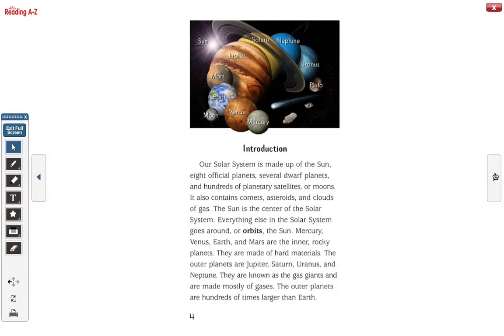Our solar system is made up of the Sun, eight official planets, several dwarf planets, and hundreds of planetary satellites or moons. It also contains comets, asteroids, and clouds of gas.